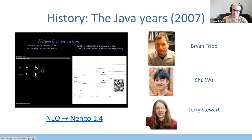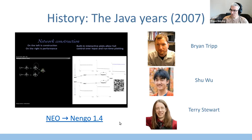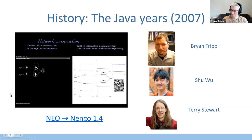One of his first PhD students, Brian Tripp, built on that and made another MATLAB tool called NEMO that brought the neural engineering framework to MATLAB. In 2007, in response to MATLAB's shortcomings, Brian rewrote it from scratch and developed a Java version of NeSim for simulating spiking neural networks using the neural engineering framework. It was originally called NEO — Neural Engineering Objects — and later renamed Nengo. Brian did the initial Java implementation, Shu Wu wrote the GUI, and Terry Stewart developed a Python scripting layer using Jython.